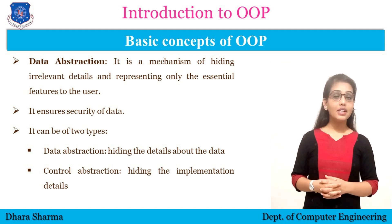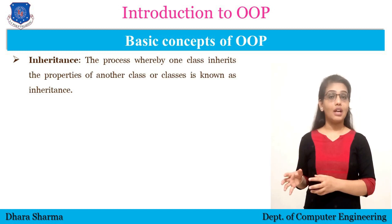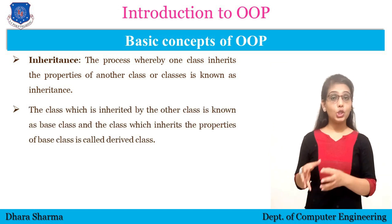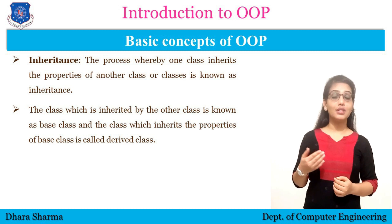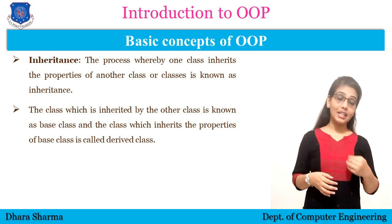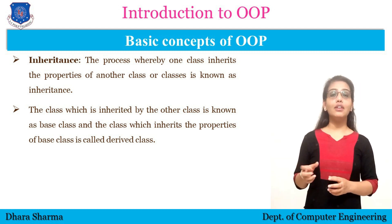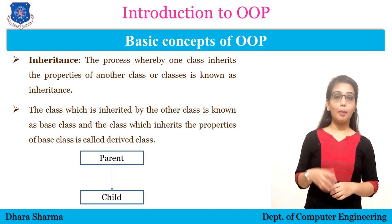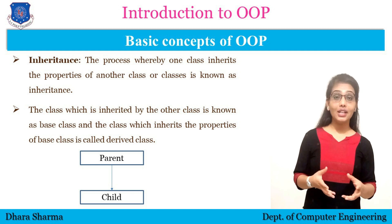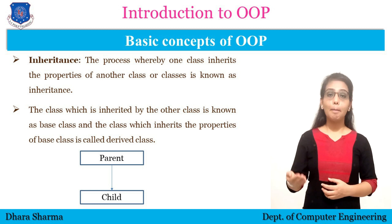Now let's understand the concept of inheritance. Inheritance means the properties of one class can be inherited into another class. The class from which properties are inherited is known as the base class, and the class into which properties are getting inherited is known as the derived class. For example, father and son, or a parent and child — we say that a child has many similar things as his or her parent.